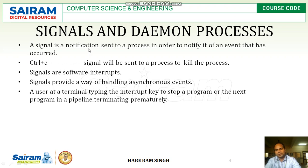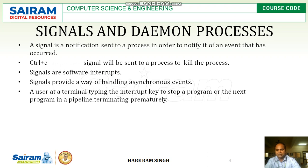For example, if a process is running and we press Ctrl+C, then an interrupt signal or kill signal will be sent to the process and the process will be killed. Signals are software interrupts — they send a notification to interrupt the process.